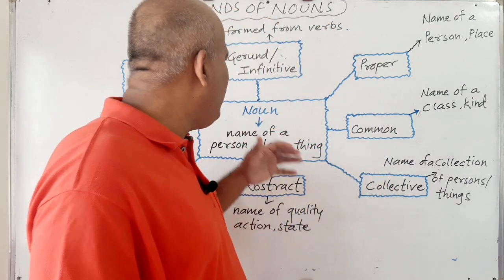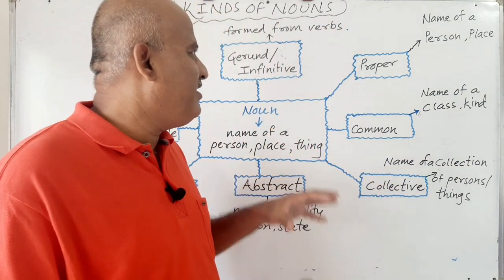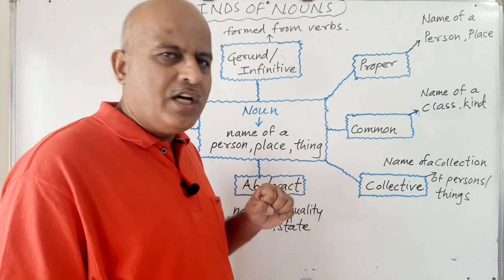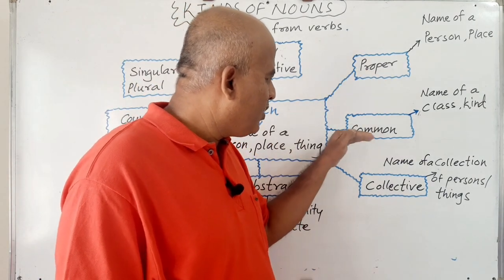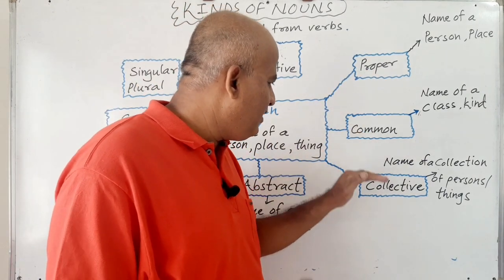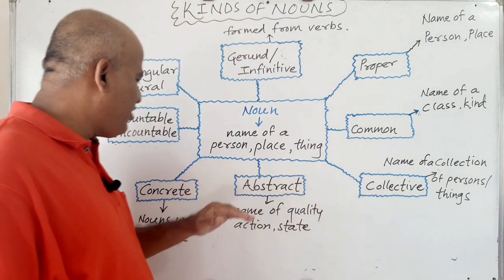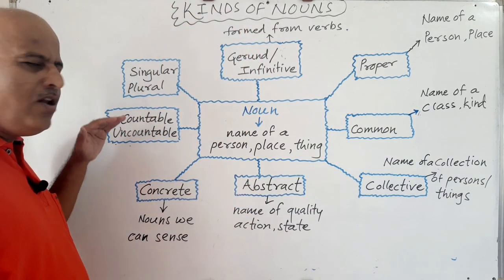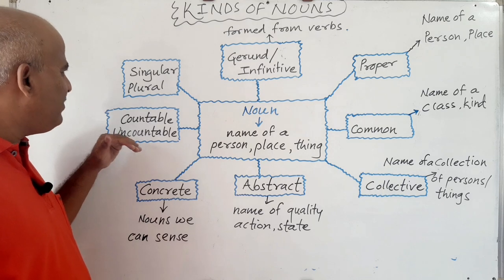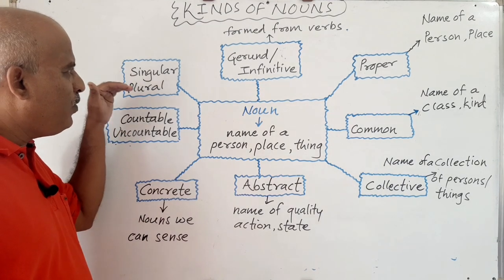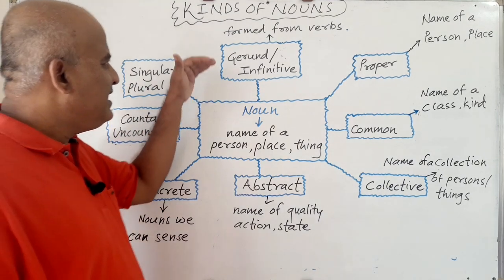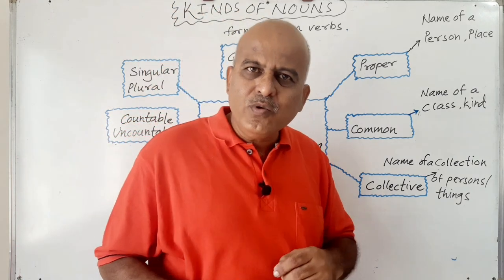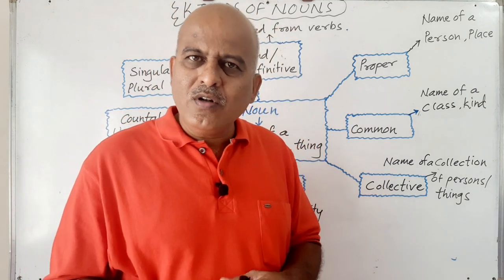Nouns are popularly classified under eight categories: proper noun, common noun, collective noun, abstract noun, concrete noun, countable or uncountable noun, singular or plural noun, and gerund and infinitive. Gerund and infinitives are also called verbal nouns.